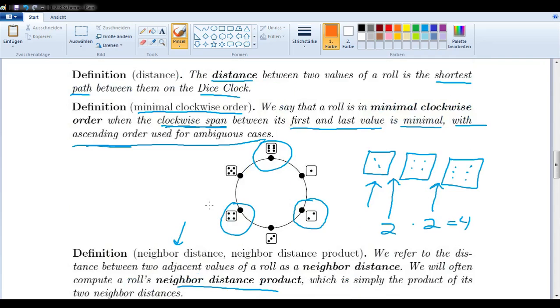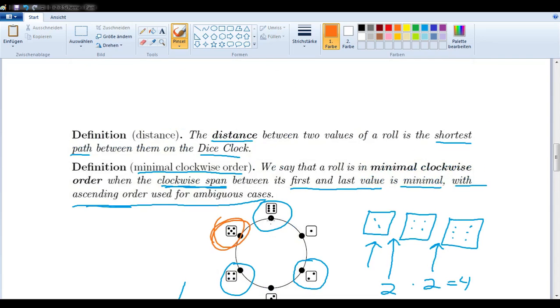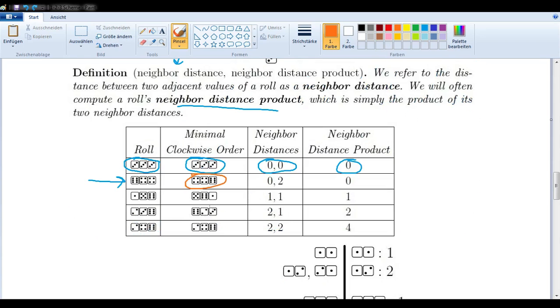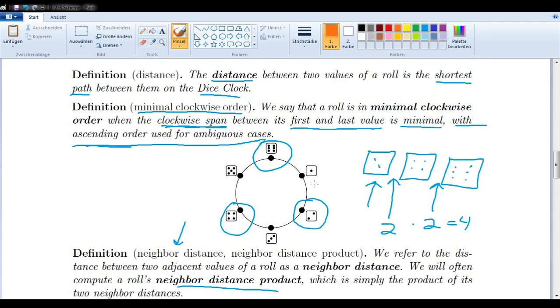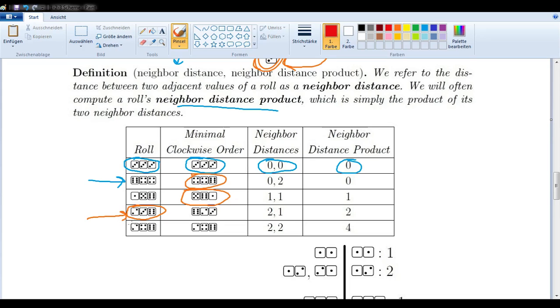Let's just look at some fast examples. 5,6,1, well obviously that is the smallest span. It was helpful, of course, that I started with the minimal clockwise order. Let's start maybe with the roll itself. So 2,3,6, let's say. You can see that this would be the smallest span. Let's do one last example. Let's say we have 2,4,6. We already did that example, right? 2,4 and 6, we said they're equidistant, and that's why the ascending order is used here.